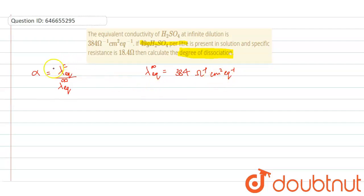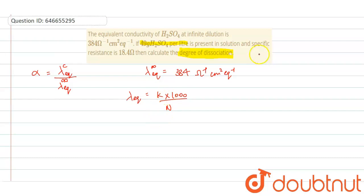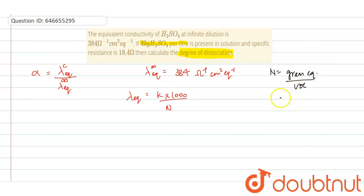Now we need to calculate the equivalent conductivity. The equivalent conductivity formula is: specific conductivity × 1000 divided by normality. Normality equals gram equivalent divided by volume.